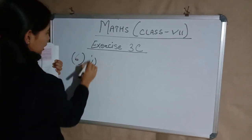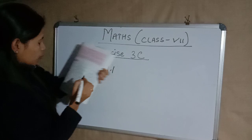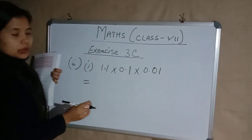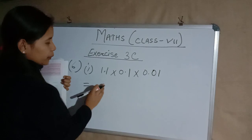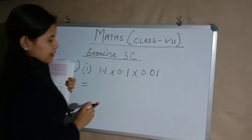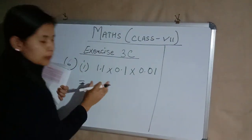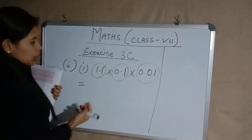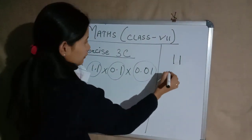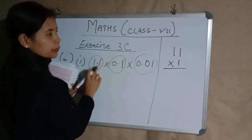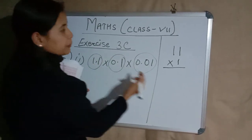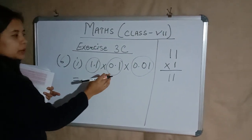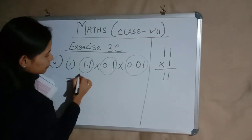So let us see question number 6, part 1. We have the multiplication of 1.1 × 0.1 × 0.01. This is a Type 3 category sum where we have multiplication of a decimal with a decimal again with a decimal. We will be considering all these decimal numbers as whole numbers. Let us first multiply the first two: 11 × 1 — we are just considering the whole numbers, neglecting the decimals for the time being — so 11 ones are 11. We place a decimal after two digits, so the answer for this step is 0.11.